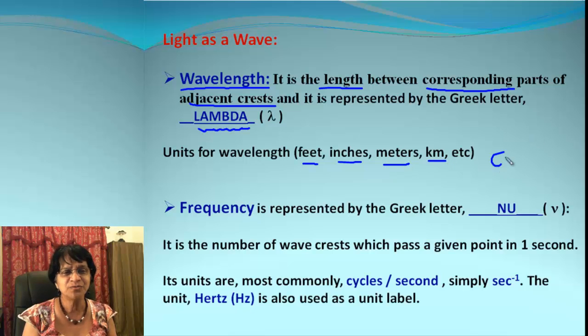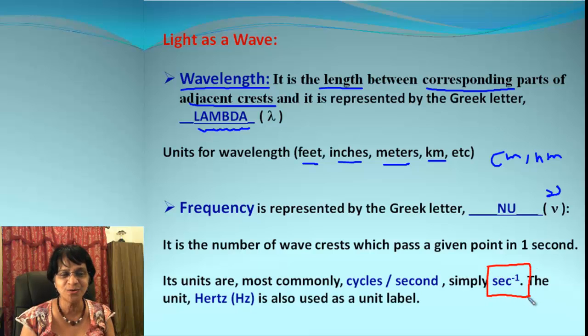The next one is frequency, and frequency is always represented as nu (ν). It is the number of wave crests which pass through a point in one particular second. So the units are cycles per second or we simply write that as sec^-1. There's also one common unit which is hertz (Hz) that can also be used for frequency.